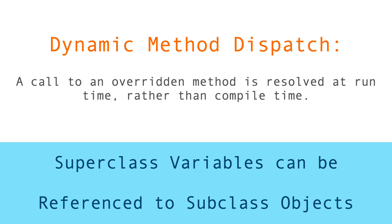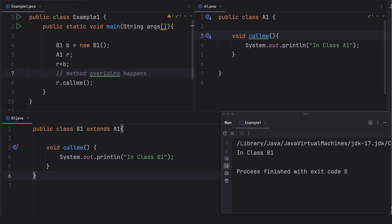When it comes to dynamic method dispatch, it says that a call to an overridden method is resolved at runtime rather than compile time. Why does it not resolve at compile time, and what are the differences between them? This video discusses various examples to understand dynamic method dispatch. One important concept used here is that a superclass variable can be referenced to a subclass object. We'll use both these concepts to understand dynamic method dispatch.